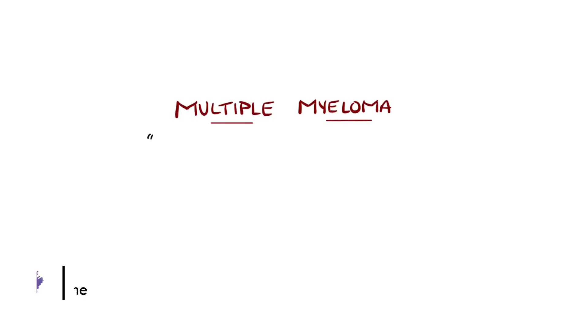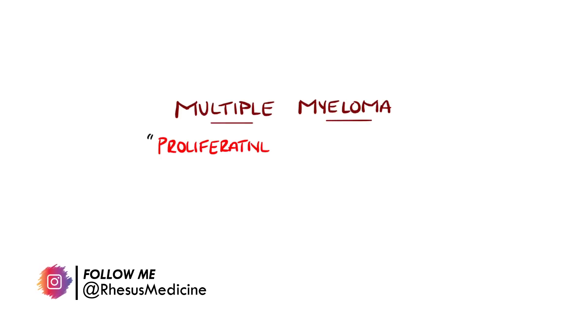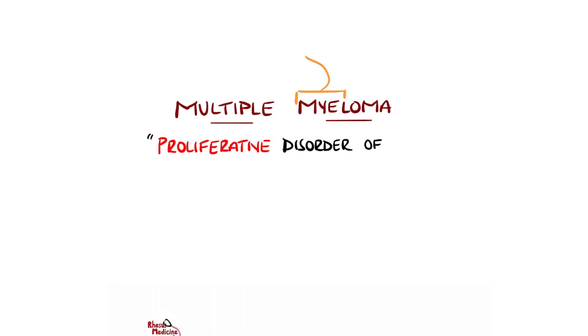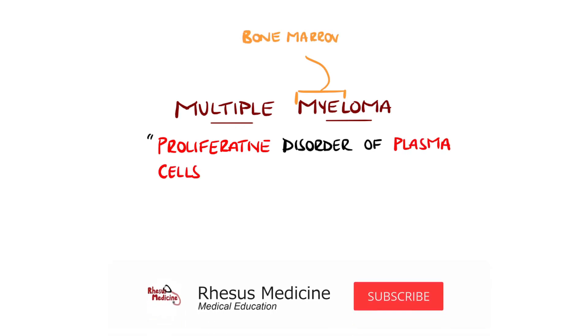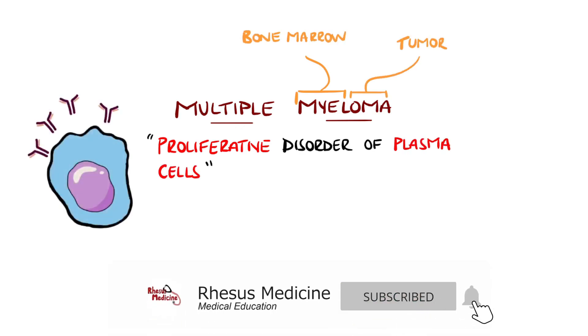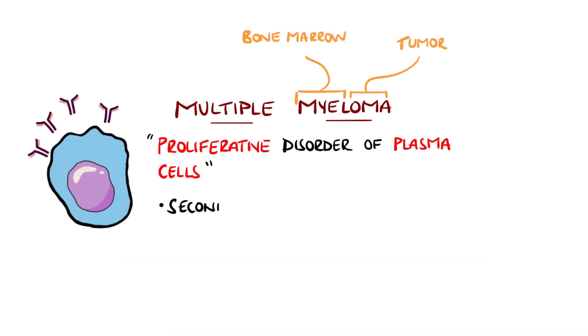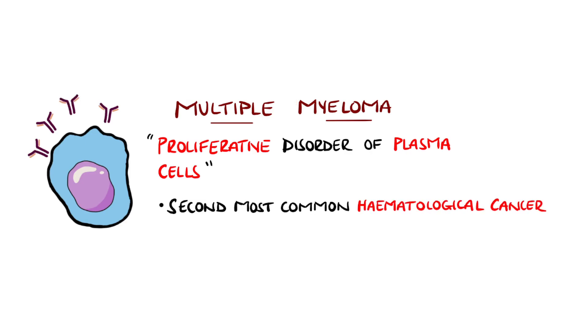Multiple myeloma is a proliferative disorder of plasma cells, a form of white blood cells that generate antibodies, and it is the second most common hematological malignancy behind non-Hodgkin's lymphoma.